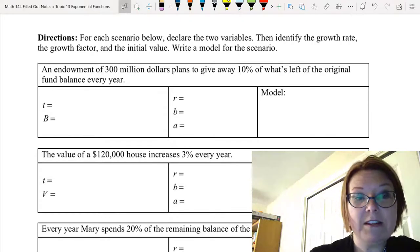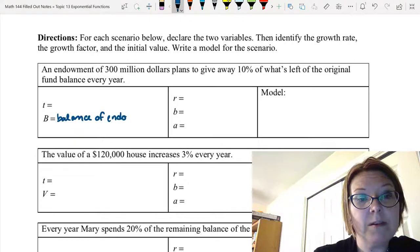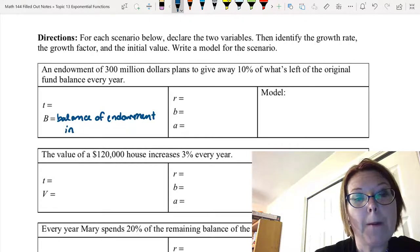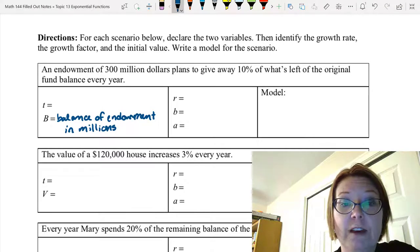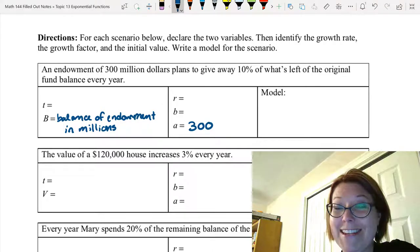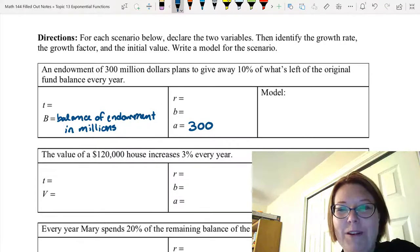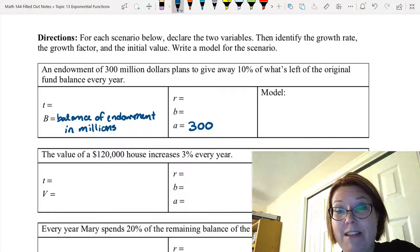So B is going to be the balance of the endowment in millions. And so then my initial value is going to be 300 because I've written that in millions. See how that works?